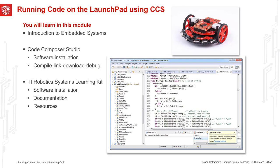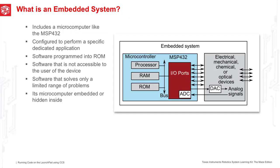Hi, John Valvano here, and in this first module we're going to get you introduced. This is the Robot Systems Learning Kit, the Maze Edition. In this particular first module, the objective will be for you to install Code Composer Studio and install the software associated with this class. Eventually we're going to build up and get to a robot, and in this PowerPoint I'm just going to introduce embedded systems so you get a sense of where all the pieces of this class will fit together. All right, let's get started.